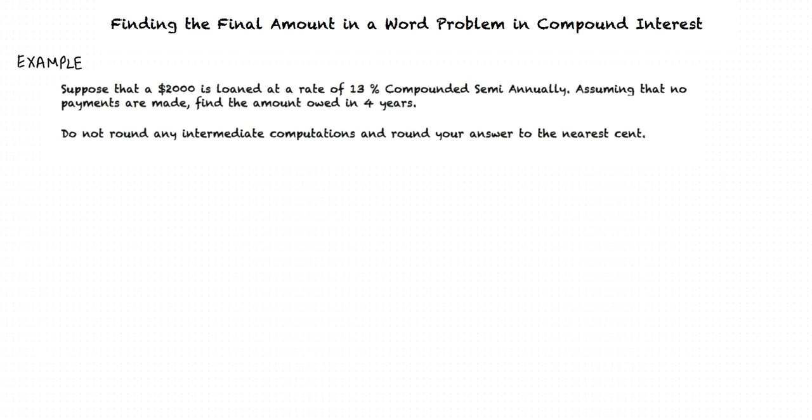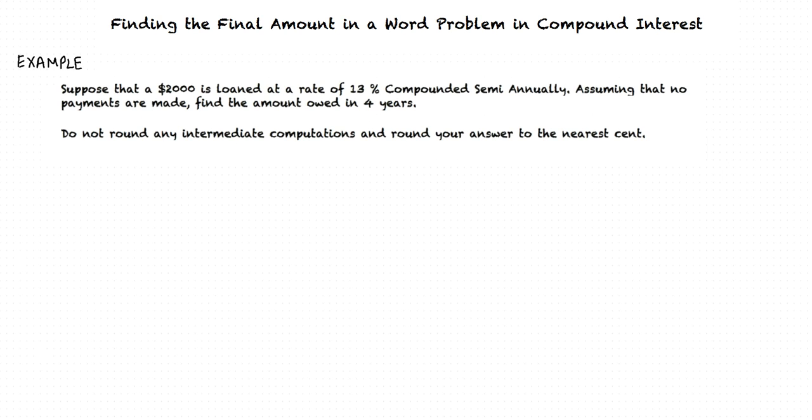Let us consider an example. Suppose that $2000 is loaned at a rate of 13% compounded semi-annually. Assuming that no payments are made, find the amount owed in 4 years. Do not round any intermediate computations and round your answer to the nearest cent.